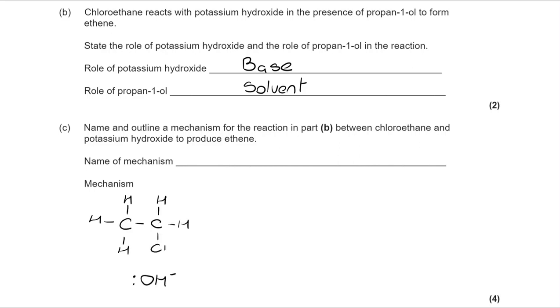So my chloroethane and my OH- are drawn out here. You can see that the mechanism has three marks, one for the arrow from the lone pair to the hydrogen on the carbon adjacent to the carbon with the chlorine. That's acting as a base as we saw above. It's accepting a proton.